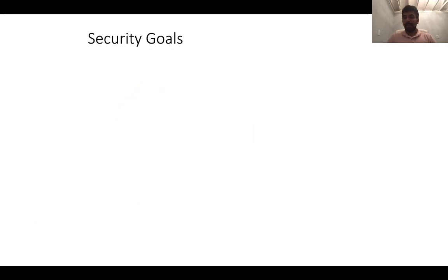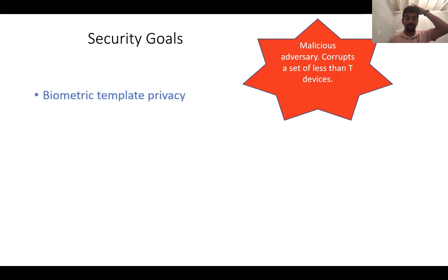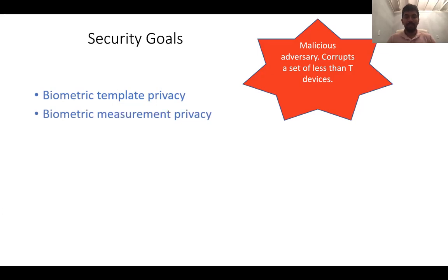So with this primitive in mind, what are the security goals that we would want to achieve? Let's consider a malicious adversary that can corrupt a set of devices, where the number of devices it corrupts can only be less than T. The first requirement is privacy of the biometric template. The template that is registered in the enrollment phase and secret shared amongst the devices should always remain private. So in any authentication session, the adversary should not be able to learn anything about the template. Similarly, we also want privacy of the measurement — the adversary should not be able to learn anything about the measurement, no matter whether a match was successful or not. Both of these requirements can be formalized using indistinguishability or simulation-based definitions.